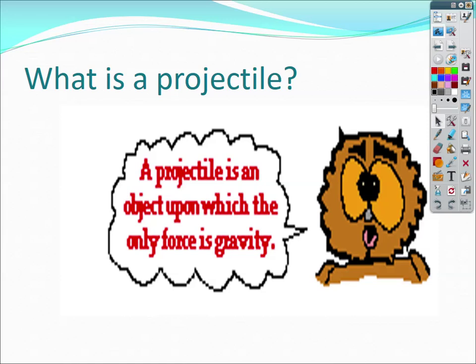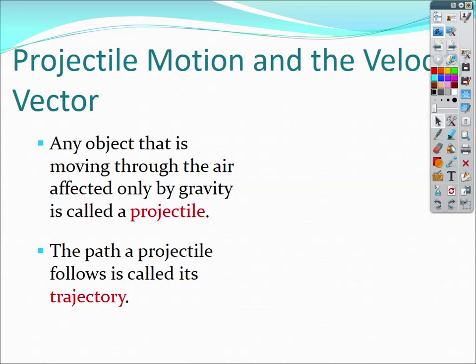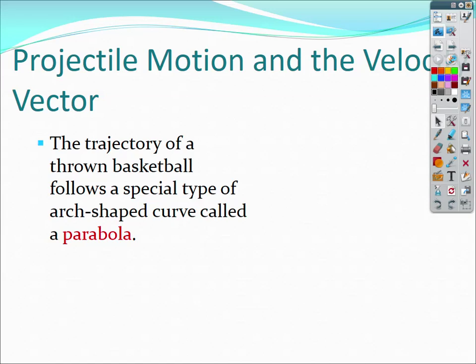The only thing acting on it will be this force of gravity — think about the acceleration due to gravity. Any object that's basically thrown into the air or dropped is a projectile. We've already done projectiles where we threw an object straight up or dropped it. When you drop something, it becomes a projectile because it's being acted upon by gravity. The path the projectile takes is called its trajectory — the dotted line is the trajectory, and the basketball is the projectile. The trajectory of every projectile will follow a parabolic, curved shape.